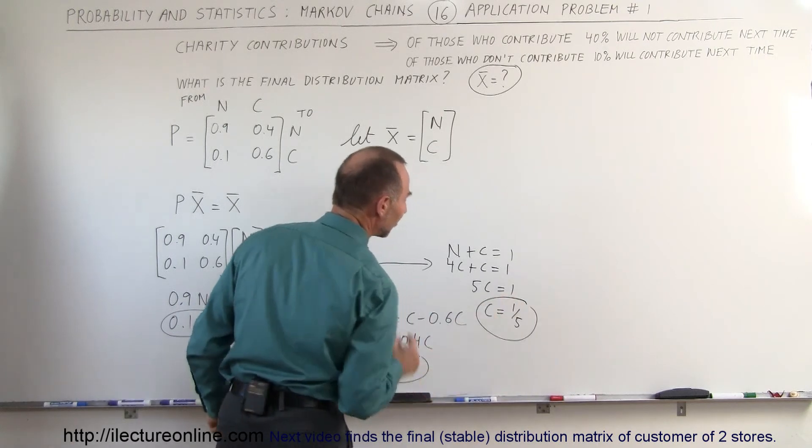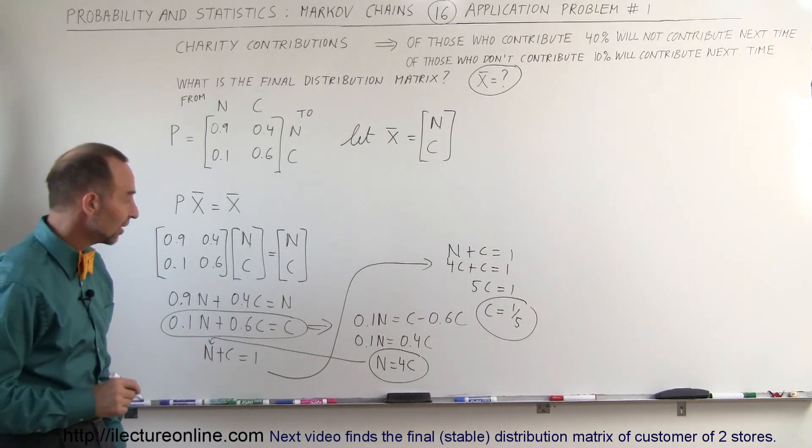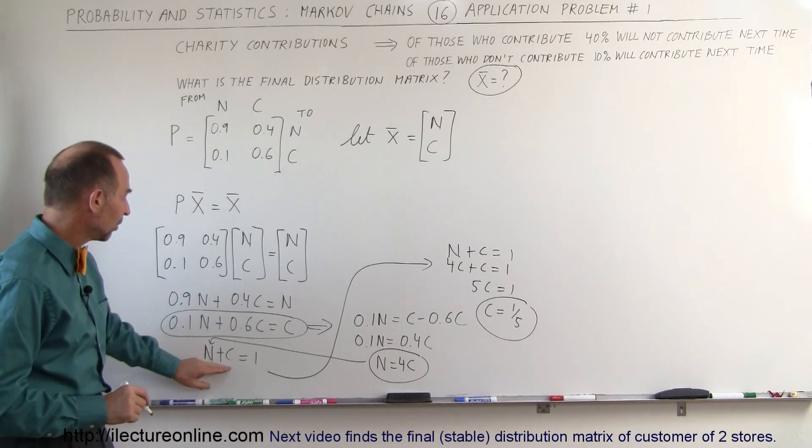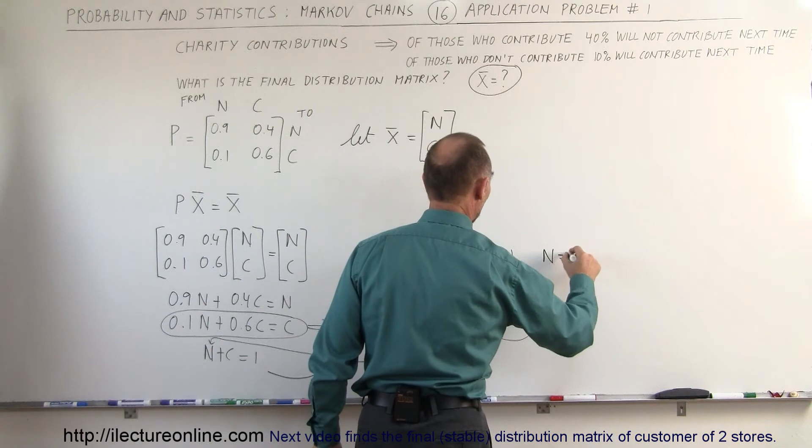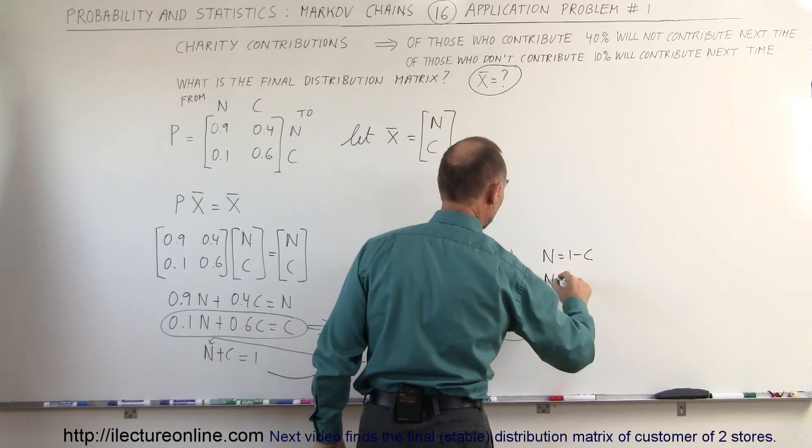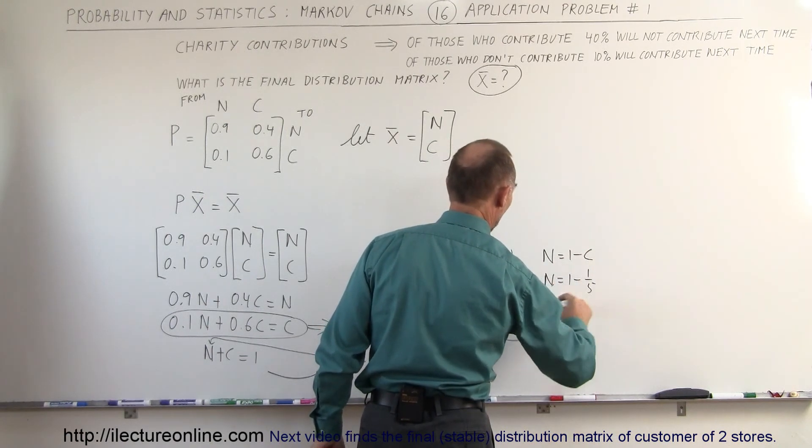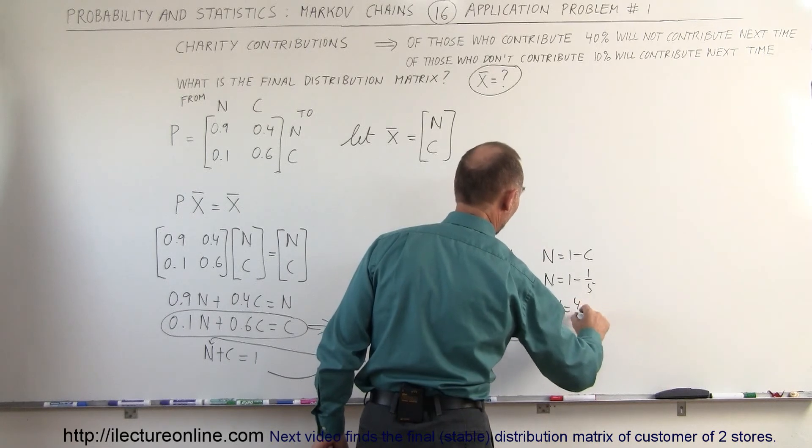So that's the final state of C, C is the contributing state, and of course, since N plus C equals 1, we then know that N is equal to 1 minus C, or N is equal to 1 minus 1 fifth, or N is equal to 4 fifths.